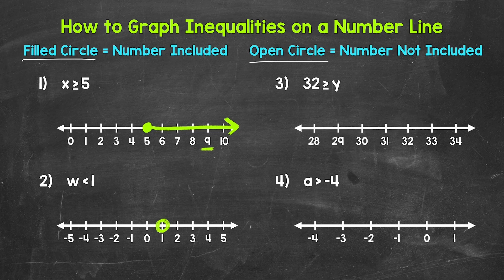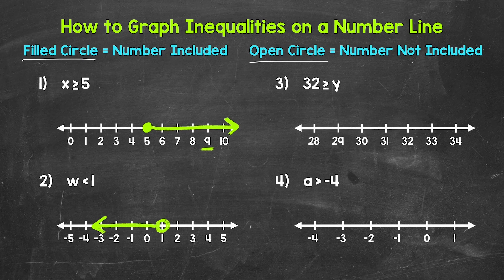So here we need an open circle to show that one is not included — it's not a solution. So let's put an open circle at one. We know that w is less than one, so we need an arrow pointing to the left, the direction of all of the numbers less than one. And now we have our inequality, w is less than one, graphed on the number line. The open circle shows that one is not included, and then the arrow represents all of the numbers less than one. So these are our solutions.